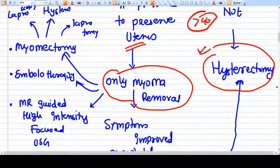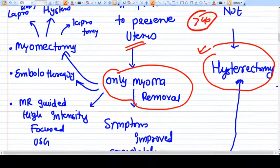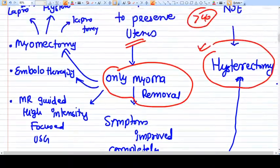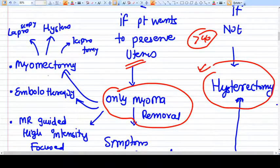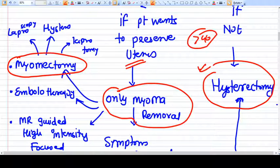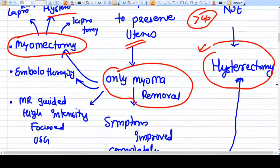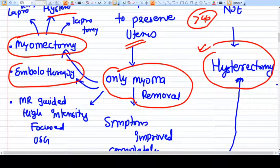So hysterectomy is a very good treatment for that, but again the patient's will is very very important here. Now if you want to remove only myoma then you have variety of options. The first is myomectomy. In myomectomy what we do, we enucleate the myoma from the uterus. It can be done by laparoscopy, laparotomy, or hysteroscopy depending on the size and site of myoma.